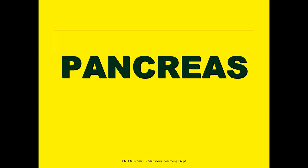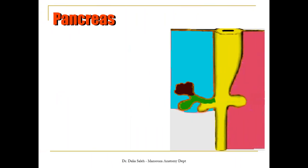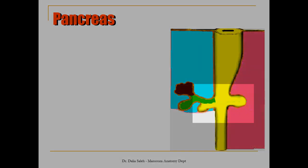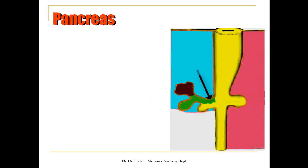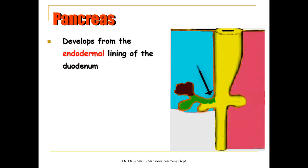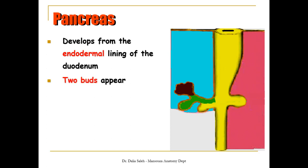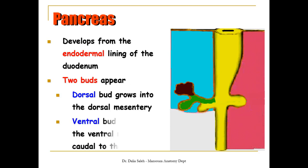Now we'll talk about the development of the pancreas. In this picture, we can see the developing GIT. This dilatation represents the stomach, and here is the developing duodenum. This is the entrance of the bile duct into the duodenum. The pancreas develops from the endodermal lining of the duodenum as two buds. The dorsal bud grows into the dorsal mesentery, while the ventral bud grows into the ventral mesentery, caudal to the bile duct.